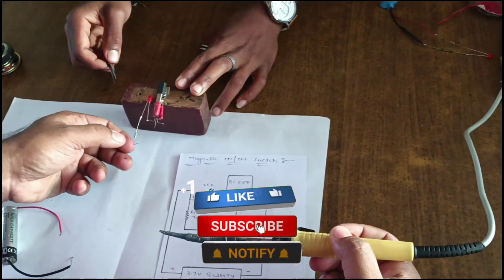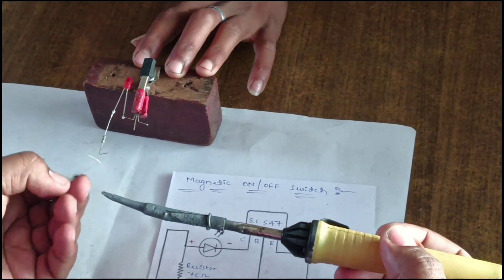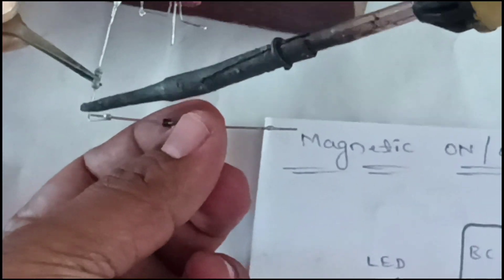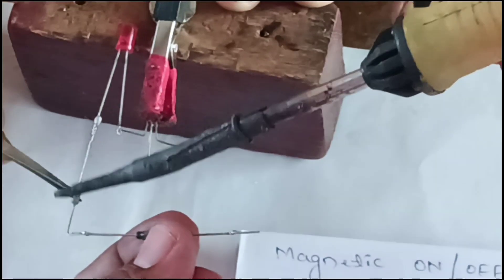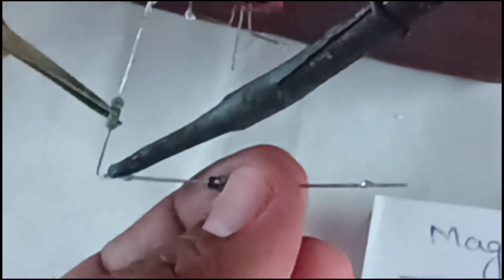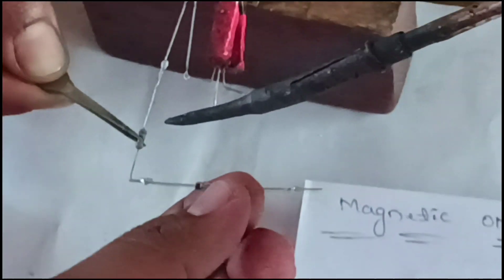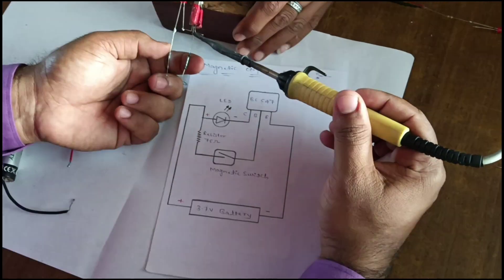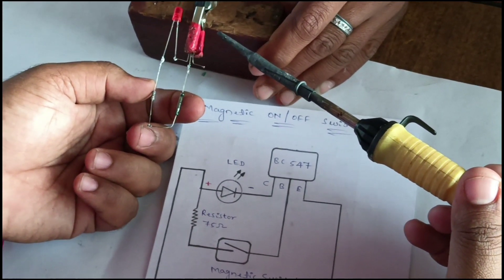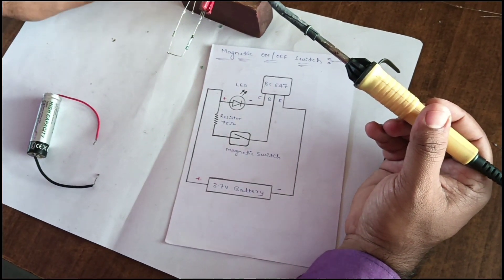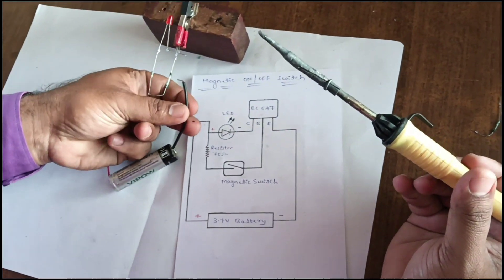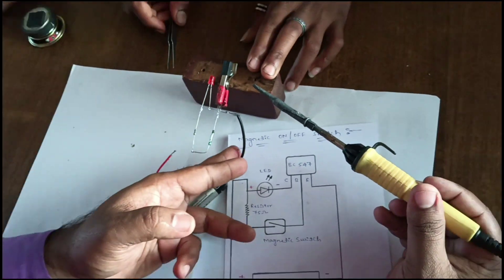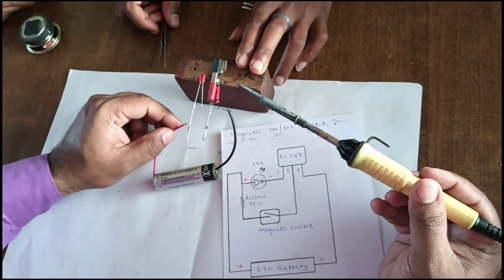The negative terminal of the magnetic reed switch is connected to the resistor. From the 75 ohm resistor to the emitter of the BC547. Next, the positive is connected to the LED positive.